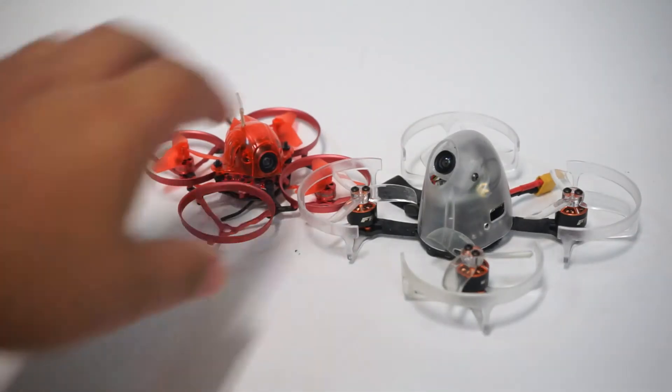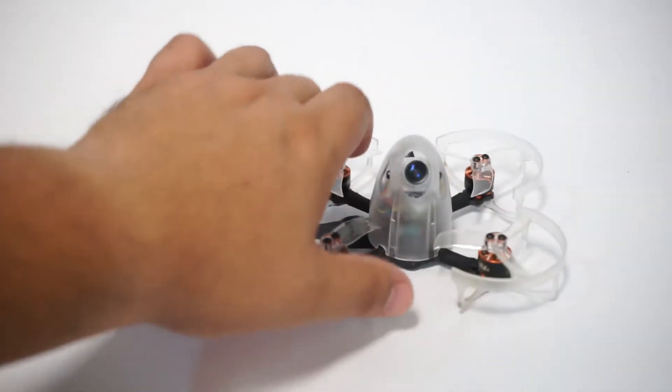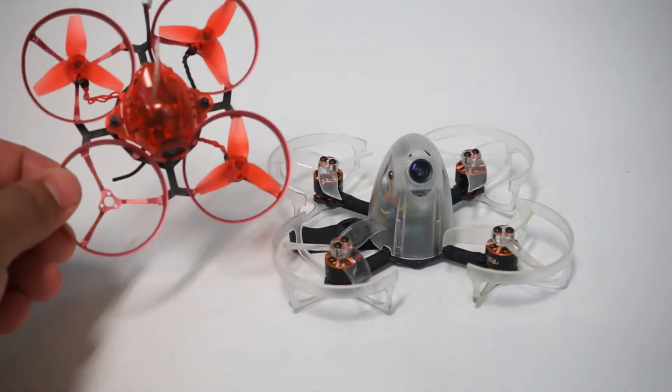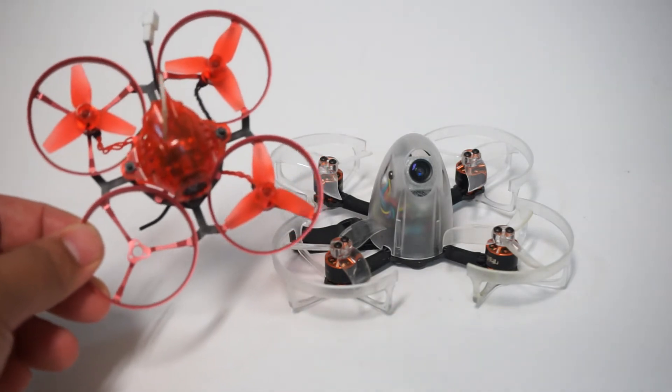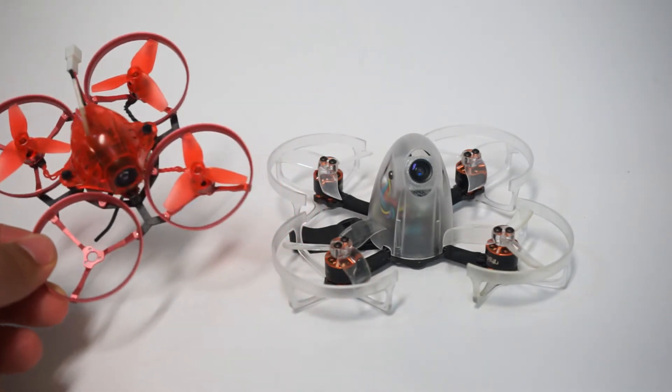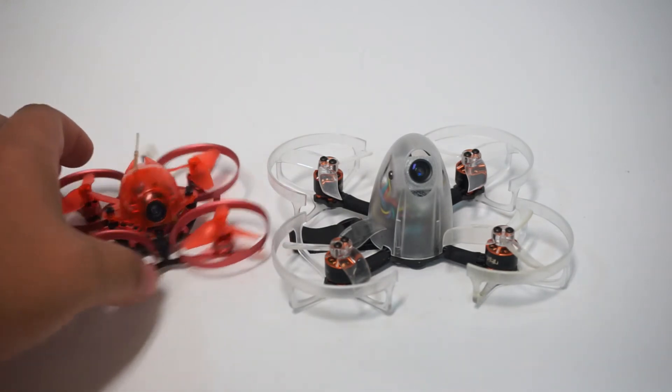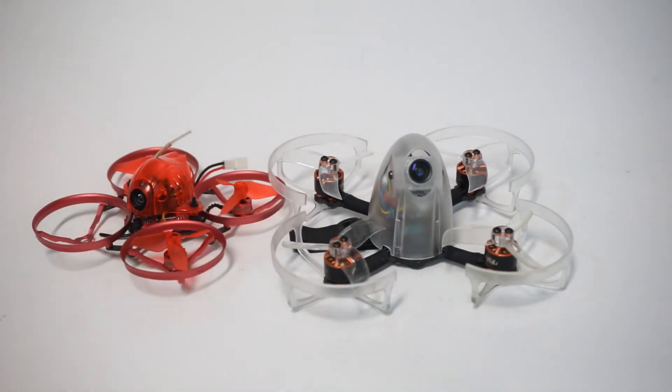So here is the Snapper 7 next to the Falcon 15 and as you can see it is much much smaller but what do you notice about this Snapper 7? There is a motor missing and that's because these motors fail so frequently so I'm waiting for a replacement for that. Hopefully this was just an isolated issue.